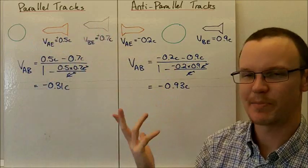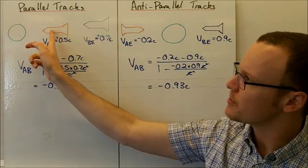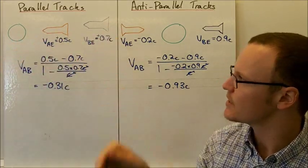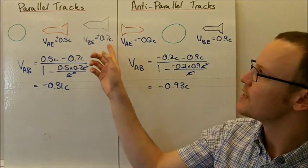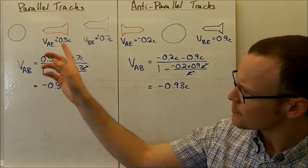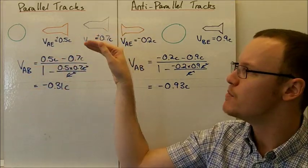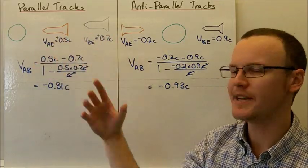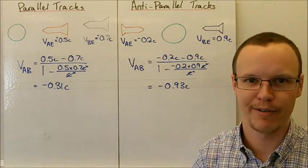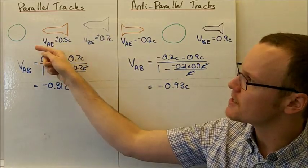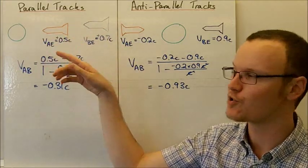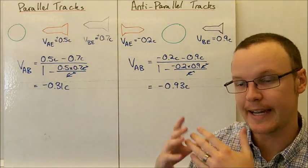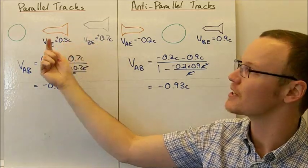For a quick example: we've got two spaceships moving towards Earth. Spaceship A is moving at 0.5c relative to Earth, and spaceship B is moving at 0.7c relative to Earth. They're both positive because they're both moving in the same direction. I've arbitrarily chosen this direction to be positive — it's really about defining your reference frame before you start. If any values are negative, that means the velocity is in the opposite direction to the way they're moving.